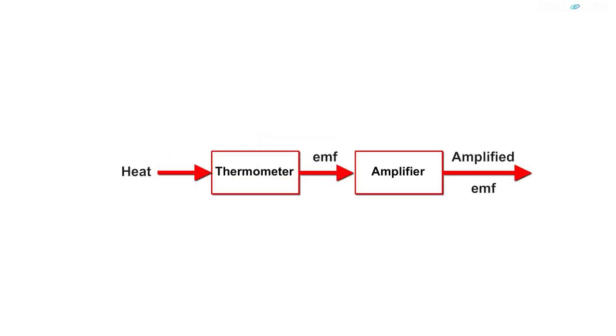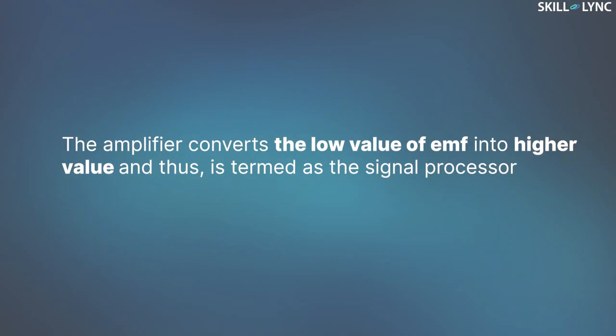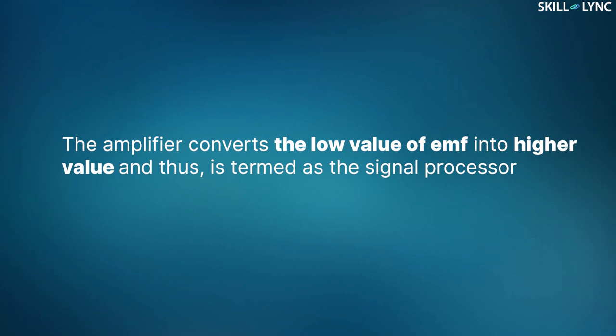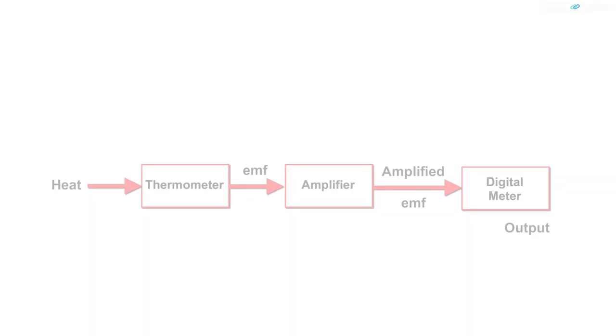The signal processor processes the information that it has received and transforms it into a suitable form for display. The information that is collected is in the form of an EMF. This value of EMF is small and hence needs to be amplified so that it can be displayed. This amplification is done via an amplifier. The amplifier converts the low value of EMF into a higher value and thus is termed as the signal processor here.